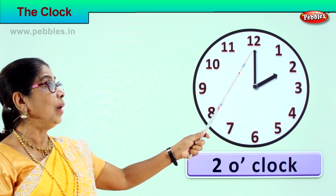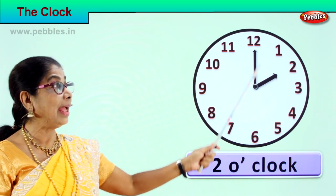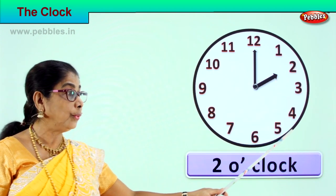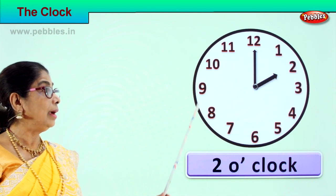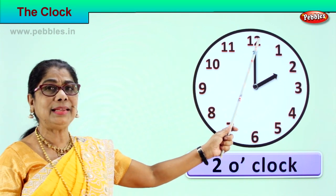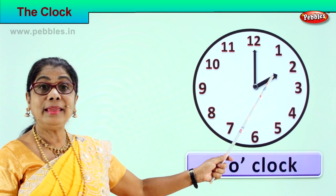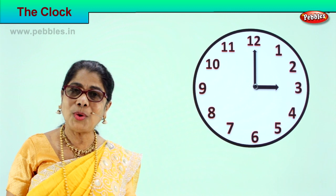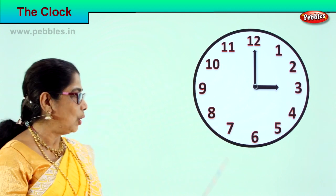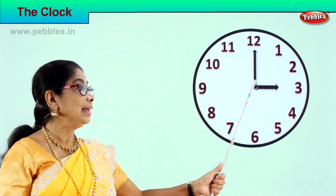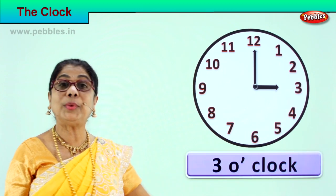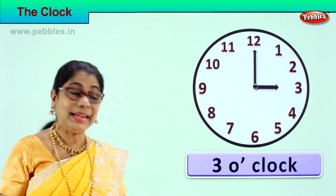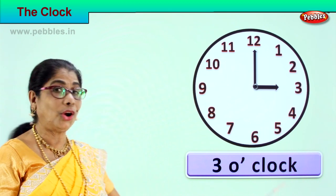Now the minute hand goes from one to two, two to three, four, and it goes right round and comes back and stays at twelve. Then the hour hand shifts from two to three. The hour hand is pointing towards three, so we say three o'clock. We read it as three o'clock.